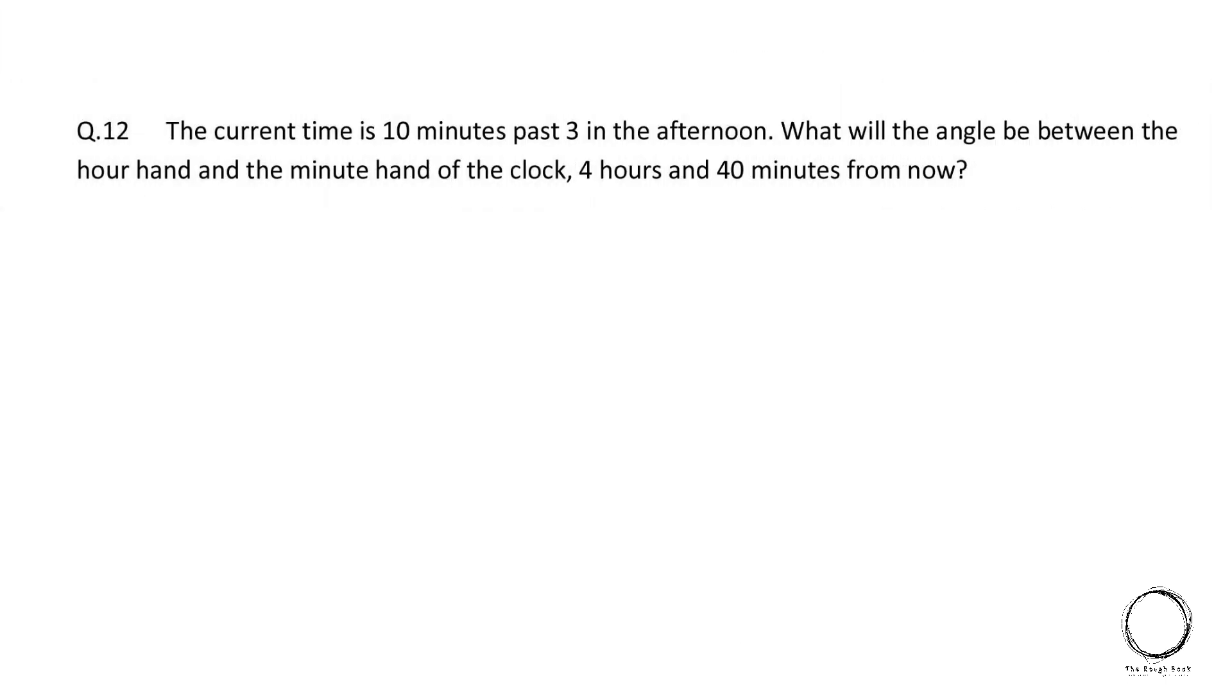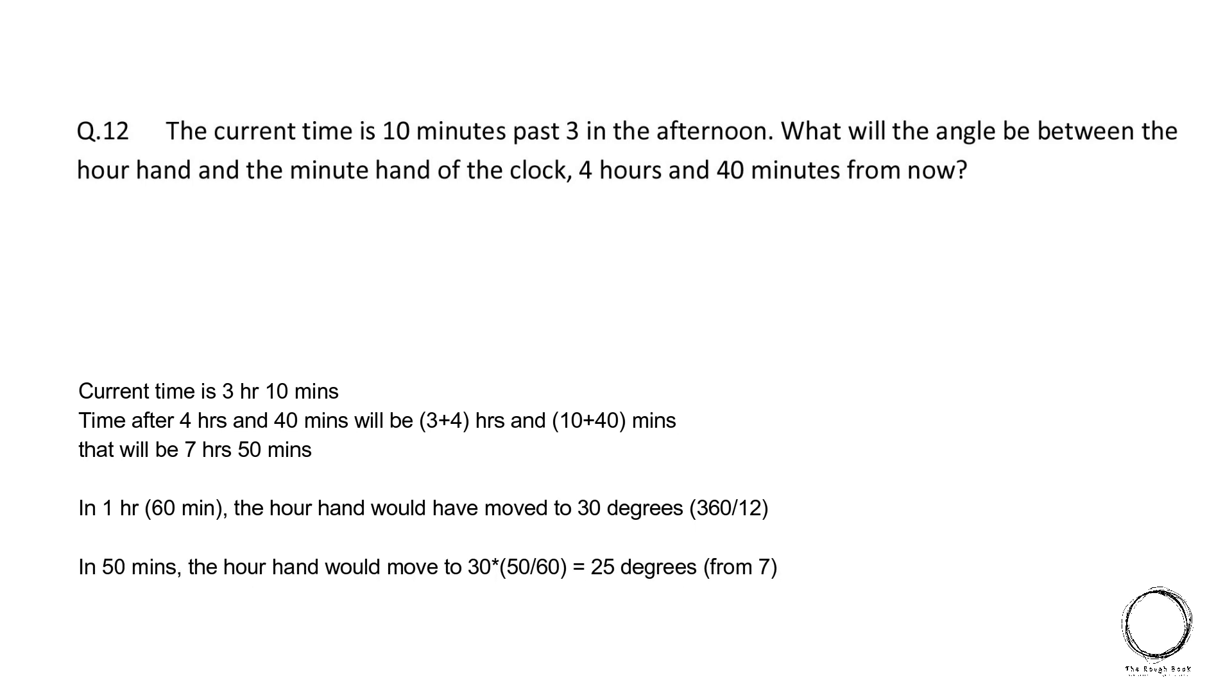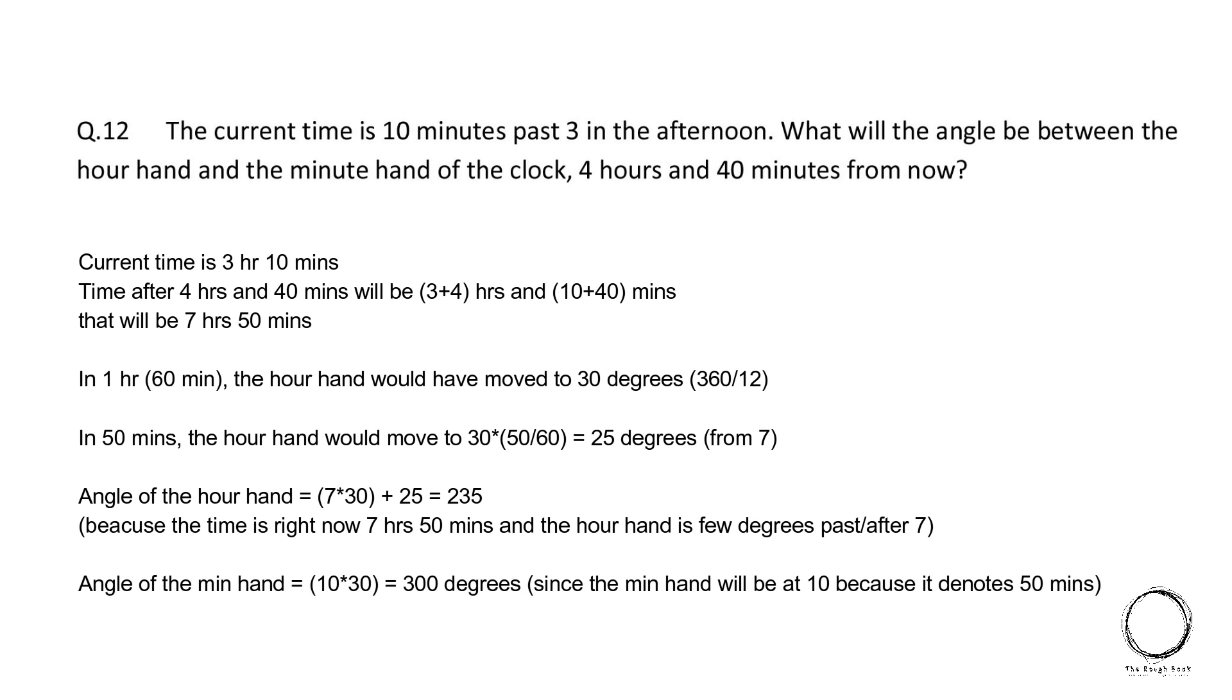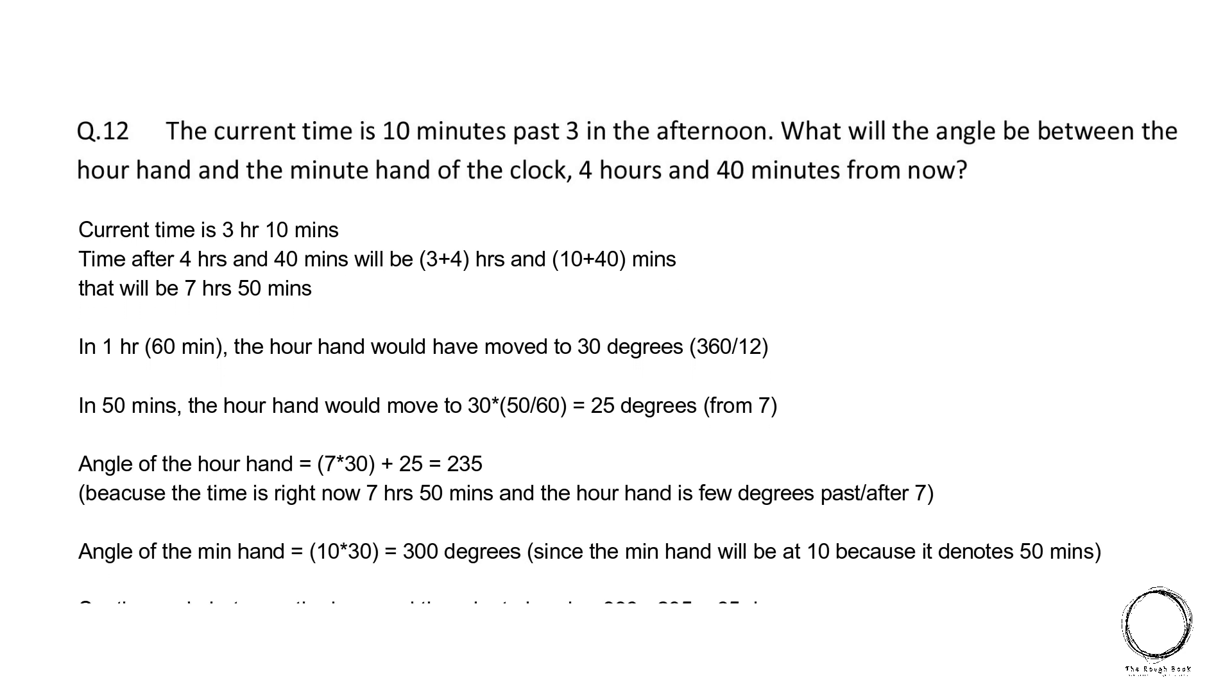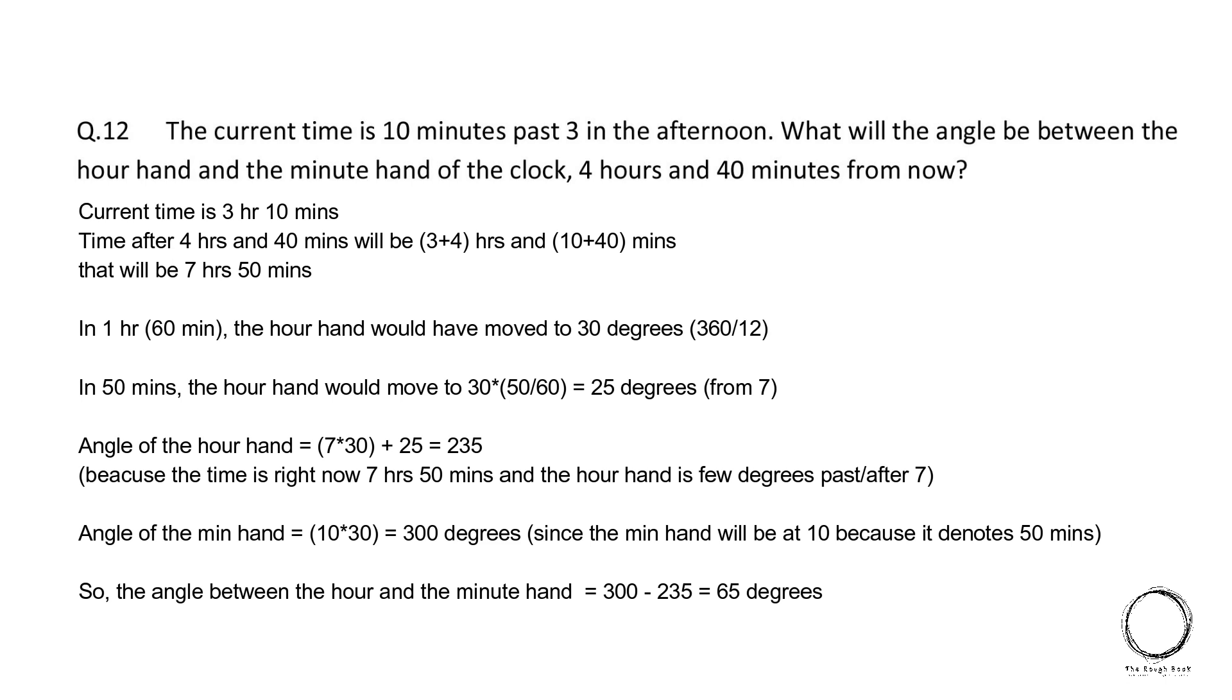Moving on, the current time is 10 minutes past 3 in the afternoon. What will the angle be between the hour hand and the minute hand of the clock 4 hours and 40 minutes from now? Current time is 3 hour 10 minutes. Time after 4 hours and 40 minutes will be 7 hours 50 minutes. In 1 hour, the hour hand would move 30 degrees, which is 360 by 12.